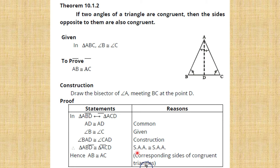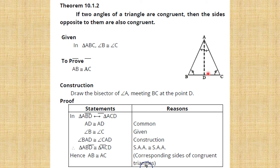We can write the side-angle-angle postulate. Hence, AB is congruent to AC. How? Because these are corresponding sides of congruent triangles ABD and ACD — AB and AC are corresponding sides of these congruent triangles.